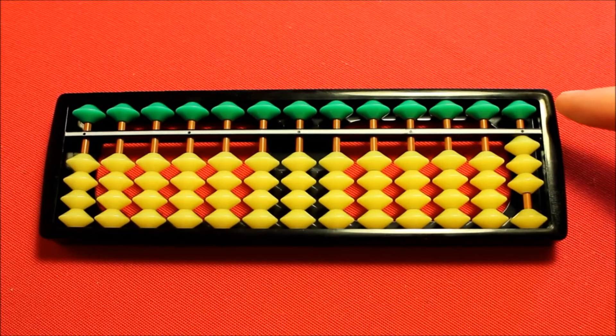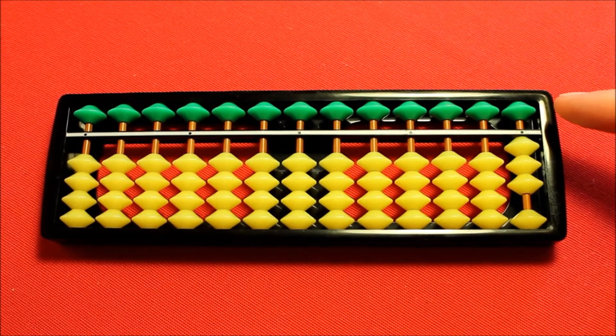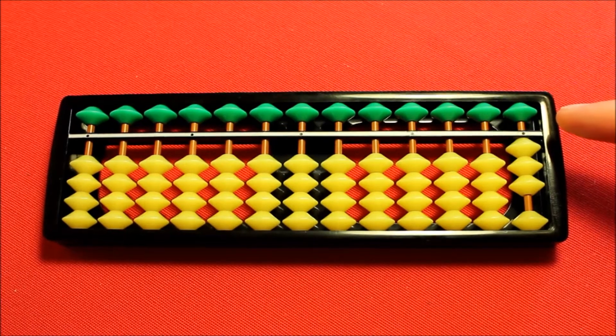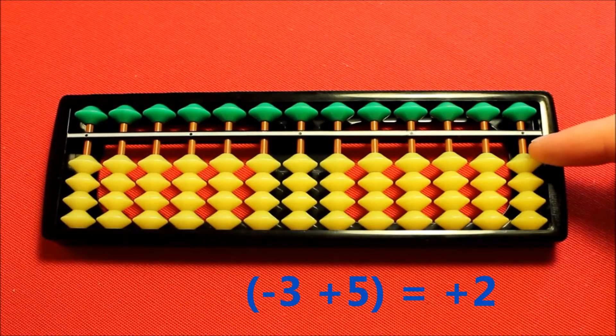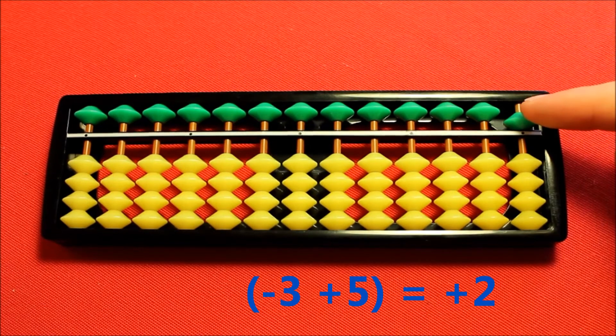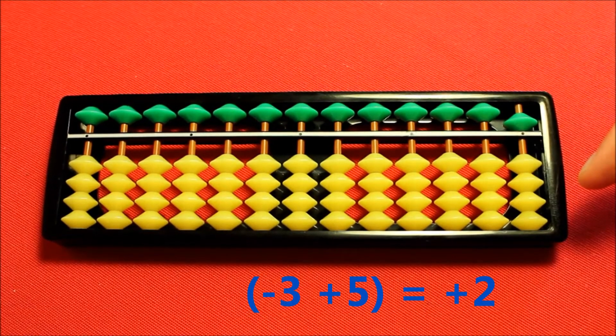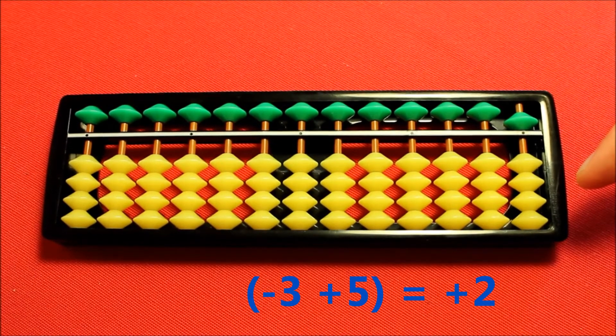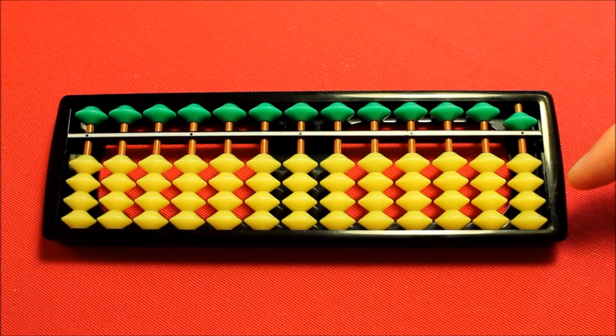But by moving my heavenly bead into place I'll be adding five which is three more than the two I wish to add. So firstly I subtract three then I add five so that the net result is that I have added two and the sum is three plus two equals five.